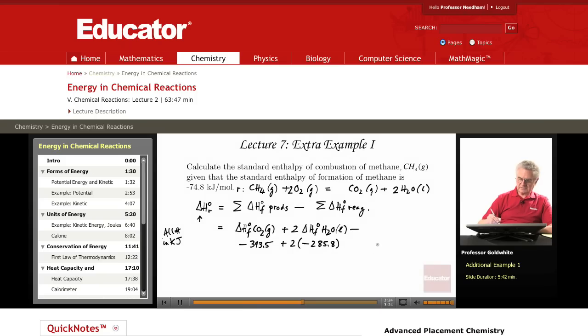minus the standard enthalpy of formation of gaseous methane, which is given as negative 74.8 kilojoules per mole, minus twice the standard enthalpy of formation of O2 gas, which is zero. Zero because oxygen is already an element in its standard state. Therefore, its enthalpy of formation from itself is zero.